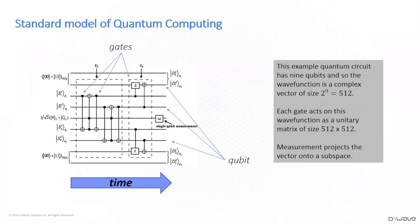It's referred to sometimes as the gate model or the circuit model. What you're seeing here is a circuit diagram for a particular simple quantum circuit. Each one of the horizontal lines represents a qubit — there are nine horizontal lines here, so this is a nine-qubit circuit. That means you would have nine of those little superconducting loops or nine of those little spinning atoms or whatever.